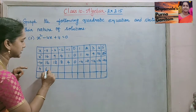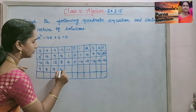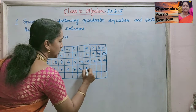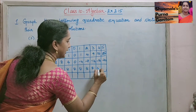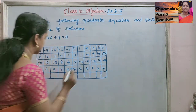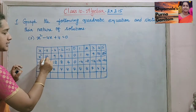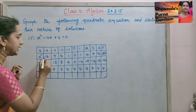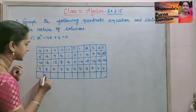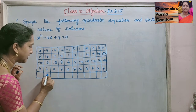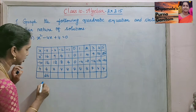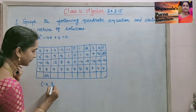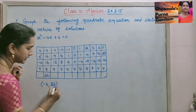The last column is 4 everywhere. Now we will add all these values. For x equals minus 4: 16 plus 16 plus 4 is 36. So the first coordinate point is minus 4, 36.